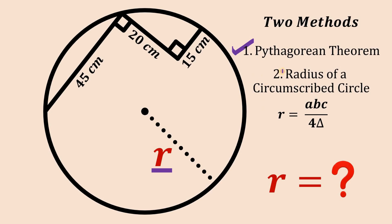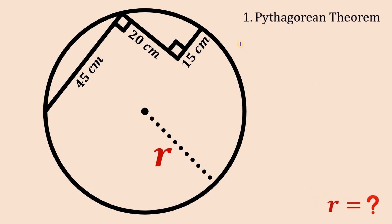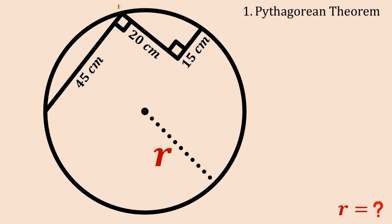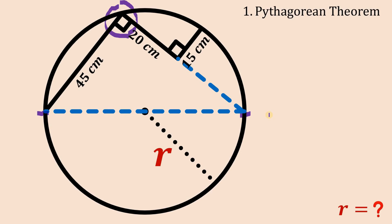Let's begin with the first solution using the Pythagorean theorem. I don't see any right triangle, but take note — this is a right angle. So if we extend the segment that measures 20 centimeters and connect the two endpoints, we create a right triangle. When a right triangle is inscribed in a circle, the hypotenuse is simply the diameter of that circle.